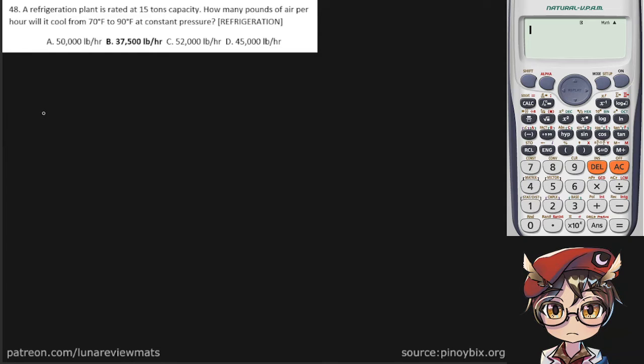A refrigeration plant is rated at 15 tons capacity. That's going to be our QA. 15 tons of refrigeration. Let's convert that into BTU per hour, and that should equate to 180,000 BTU per hour.